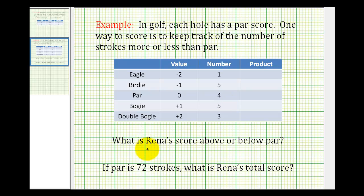So we have two questions. First, what is Rena's score above or below par? And then second, if par is seventy-two strokes, what is Rena's total score?